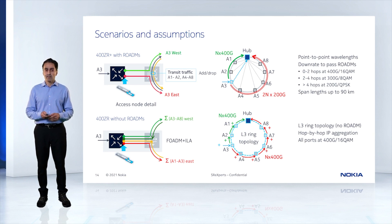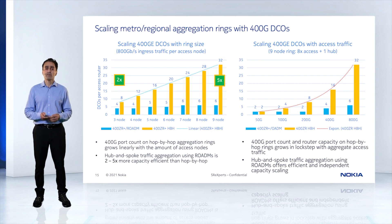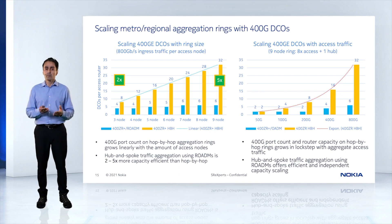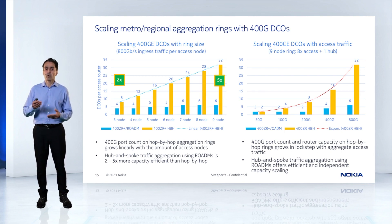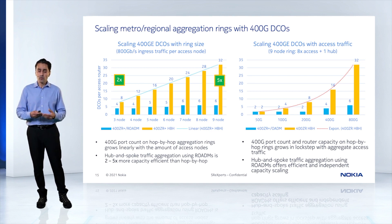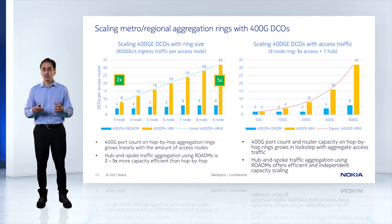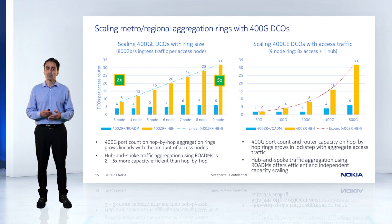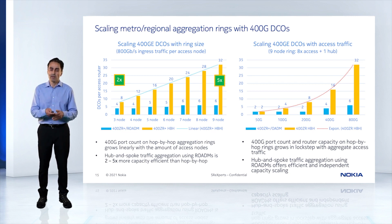Looking at the port counts required, in a hop-by-hop model versus 400G ZR+ with ROADM, you need five times the number of ports in the hop-by-hop model — which is expected because everything is terminating at 400G — and that's at 800G of traffic. At low traffic levels there isn't much difference, but if your network is going to grow, port count grows significantly. One important consideration: if you design your network without ROADMs and amplifiers today and want to add them later, that is a complete architectural shift, so design choices made today may impact your future spend.